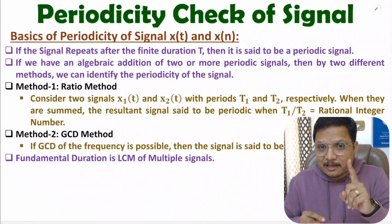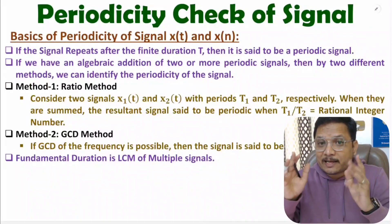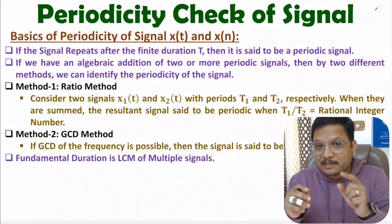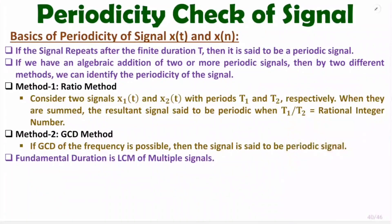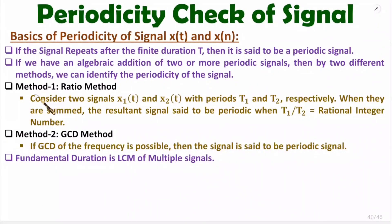If you have a signal which is repeating after a finite duration T, then one can say the given signal is a periodic signal. If we have an algebraic addition of two or more periodic signals, then by two different methods we can identify periodicity. The first method is the ratio method and the second method is the GCD method.